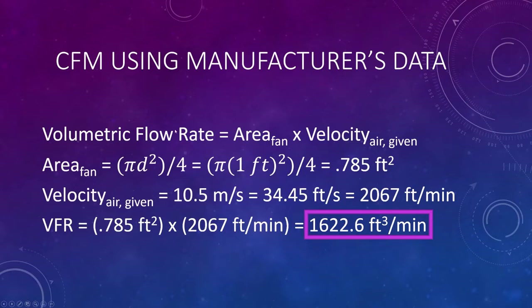So to calculate CFM or volumetric flow rate, they're the same exact thing. It's just the area of the fan times the velocity coming out of it. So the formula for the area of the fan is pi times diameter squared divided by 4. We'll pop in one foot and we get 0.785 square feet. And then velocity is going to be the 10.5 meters per second. And I'm going to convert it to feet per second and then convert it to feet per minute. The reason why I do that is because square footage times feet per minute gives us the units of cubic feet per minute or CFM. So popping these two values into our volumetric flow rate formula, we end up getting 1622.6 CFM.